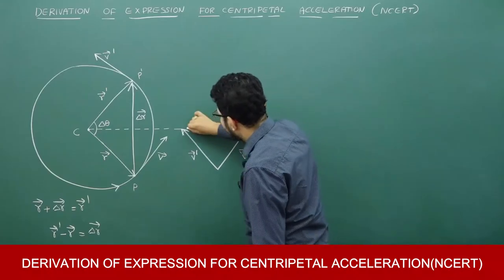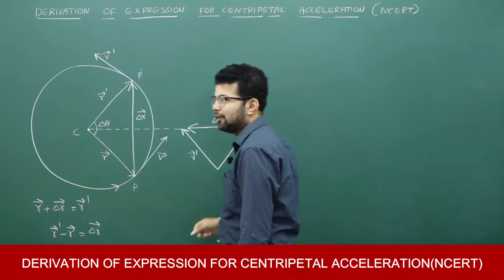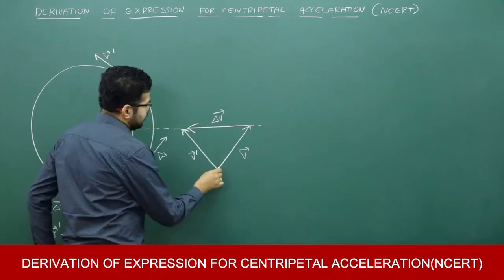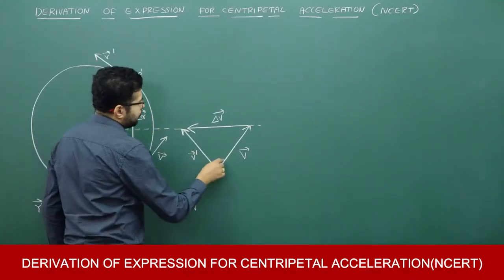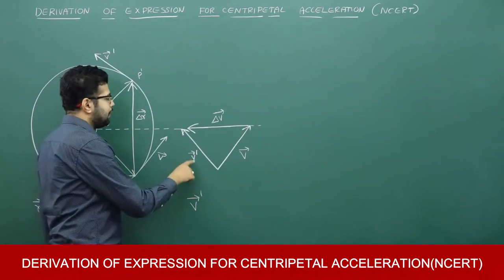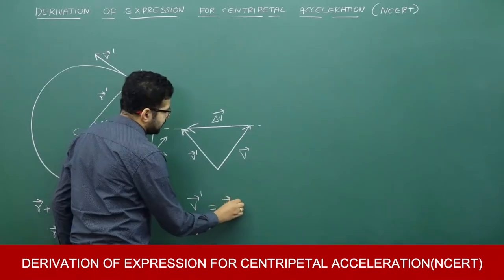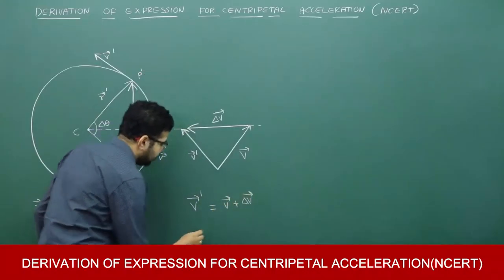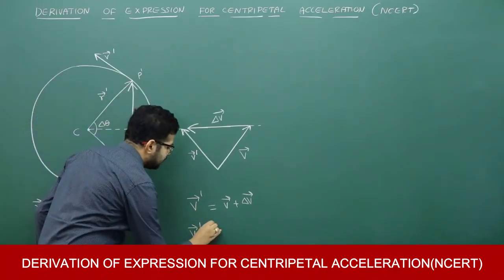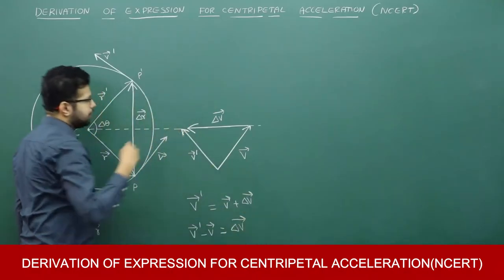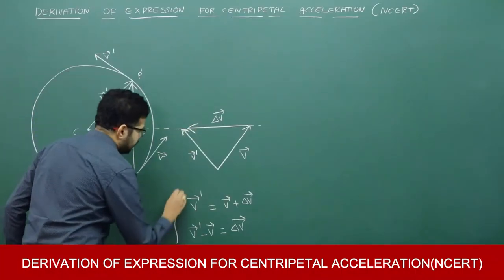Then what is this vector? This vector is change in velocity. Using the triangle law of vector addition: vector v and delta v are in order, v' is the closing side taken in the opposite order, so v' = v + delta v. Therefore final velocity minus initial velocity equals delta v — that is change in velocity.